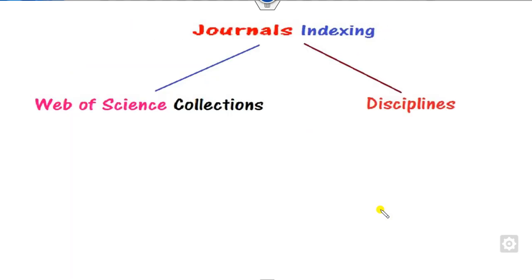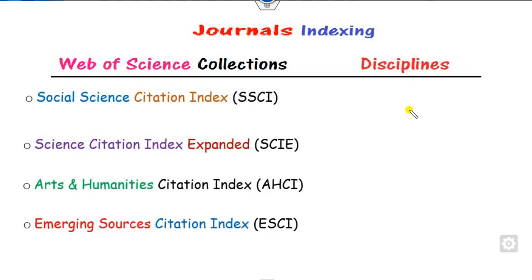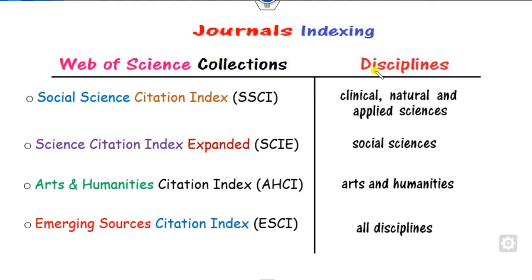Journal indexing is discretized into two parts: one based on the Web of Science collections and their corresponding disciplines. There are four Web of Science collections: SSCI, Science Citation Index (SCI), Arts and Humanities Citation Index (AHCI), and Emerging SCI. Corresponding to SCI, the discipline covers natural and applied sciences. SSCI covers social sciences, and AHCI is for arts and humanities.